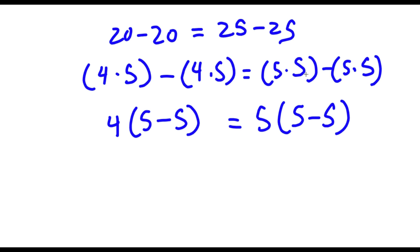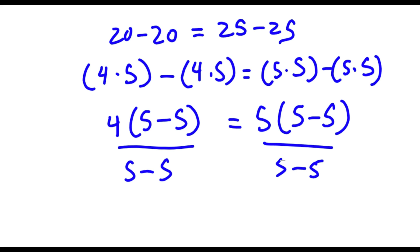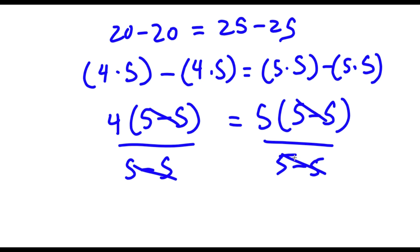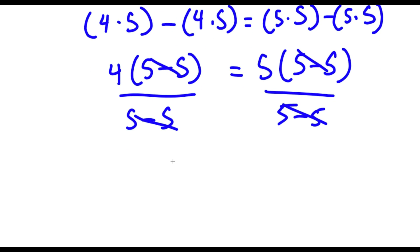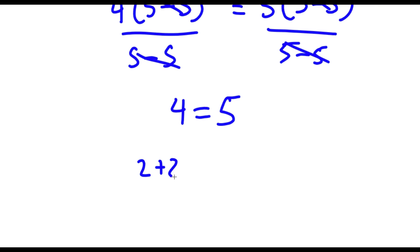So now what I'm going to do is divide both sides by (5 minus 5). These two cancel out and these two cancel out. And now I'm left with 4 is equal to 5. Now, 4 is the same thing as 2 plus 2. So I have 2 plus 2 is equal to 5. And there it is — I just proved that 2 plus 2 equals 5.